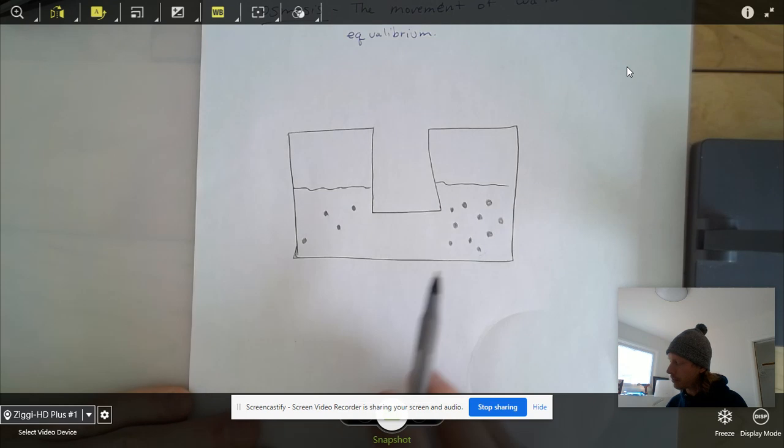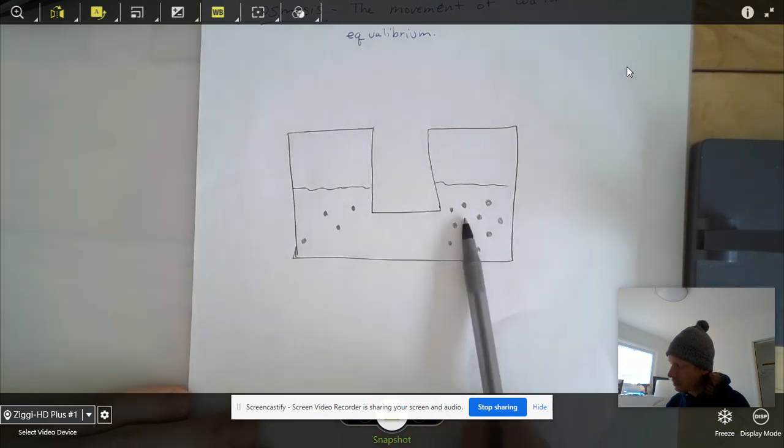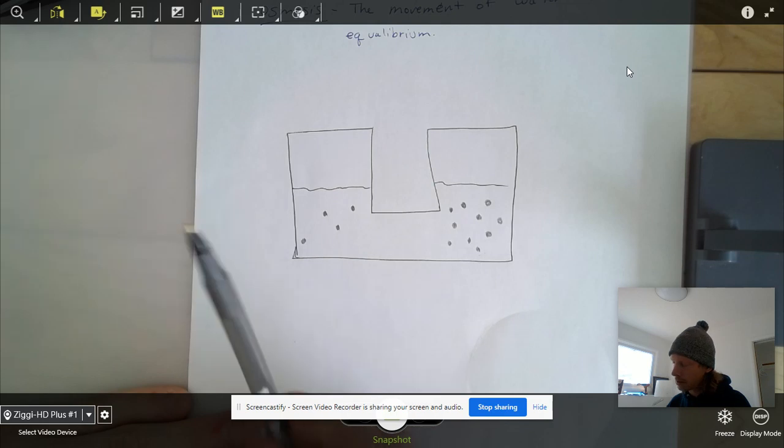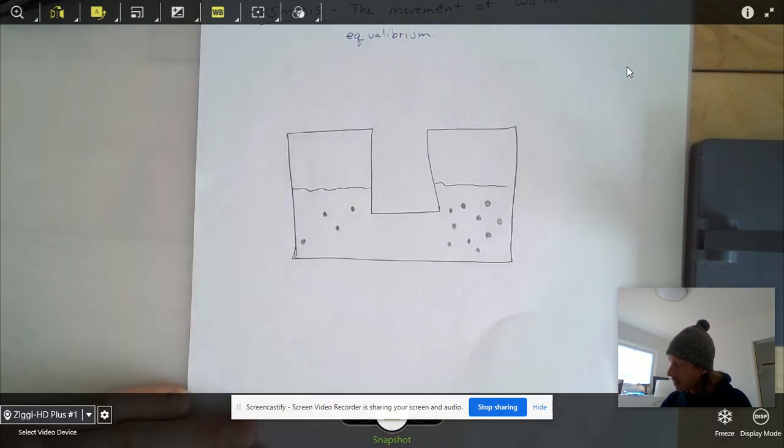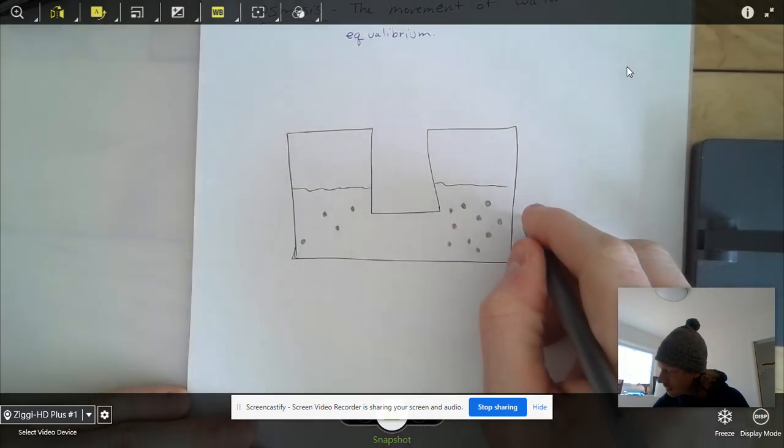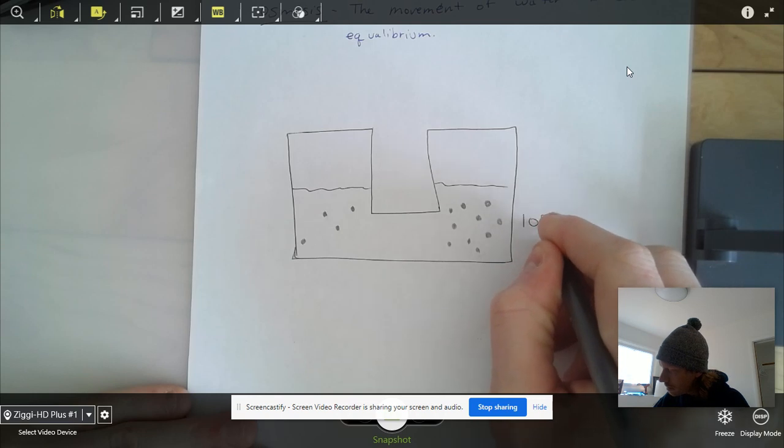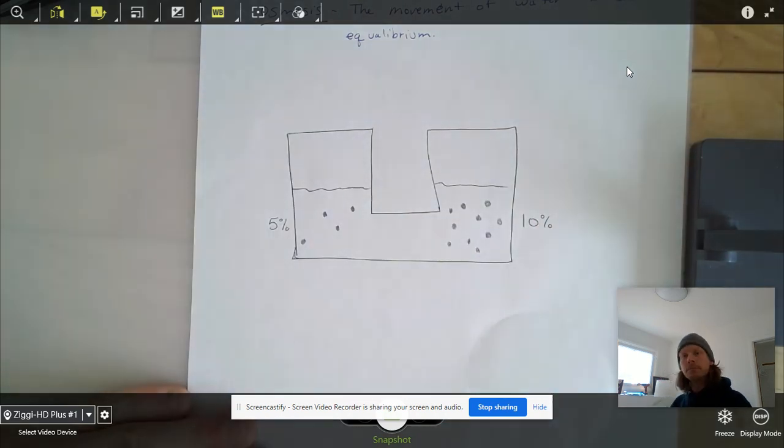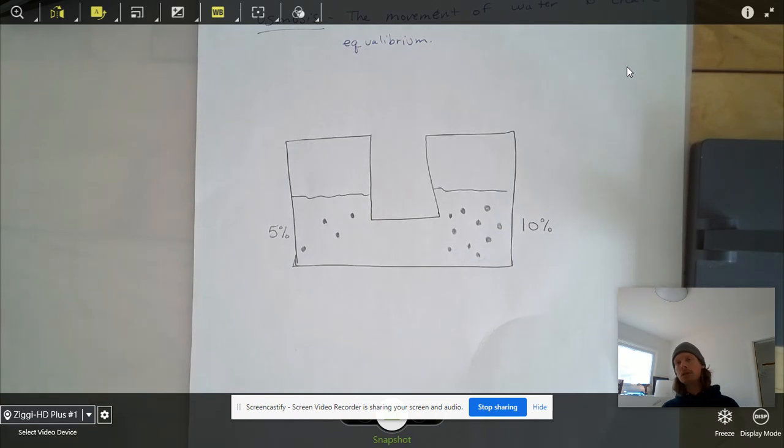And we can think about if we were talking about diffusion, we could talk about the particles spreading out evenly in order to create a consistent concentration all the way across. Let's put some numbers to this. Let's say this is 10% concentrated on the right-hand side and 5% on the left. So this is concentrated over here.